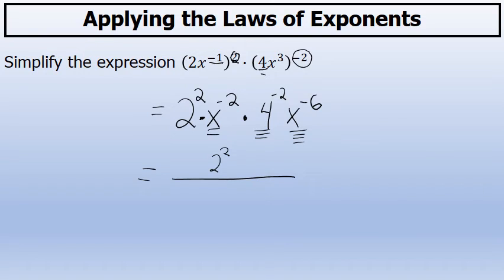The x to the negative 2, since it had a negative exponent, will move to the denominator where the exponent becomes positive. The 4 to the negative 2 also moves to the denominator where the power of negative 2 becomes positive 2. And the x to the negative 6th moves to the denominator as well, where it becomes x to the positive 6th.